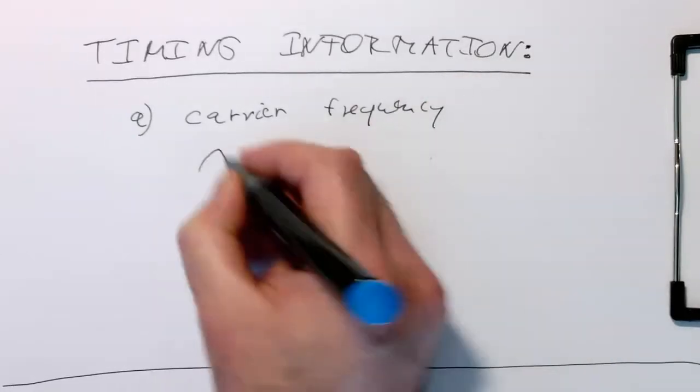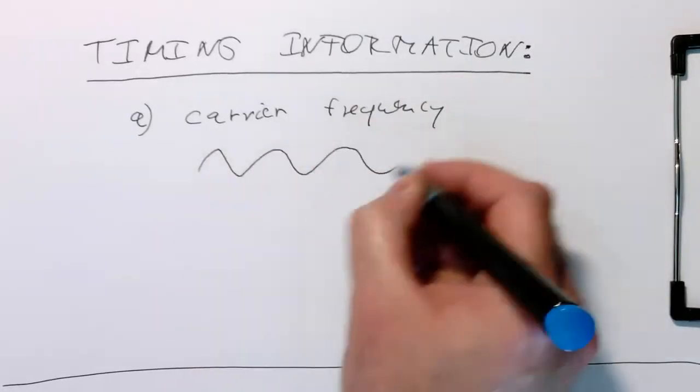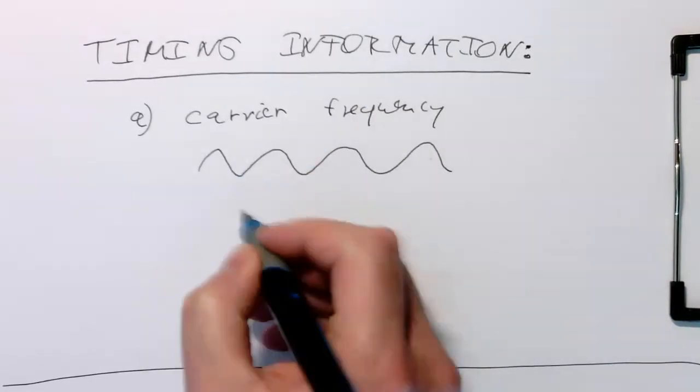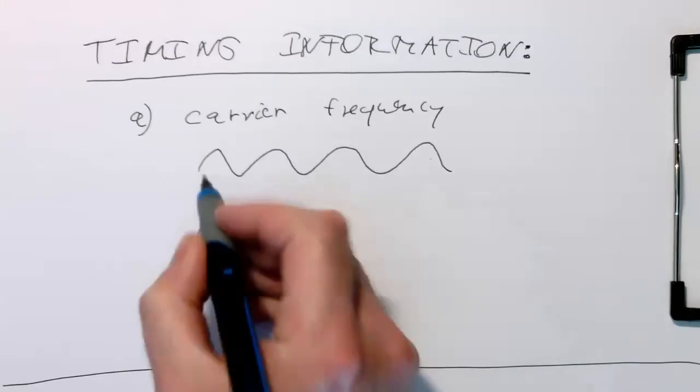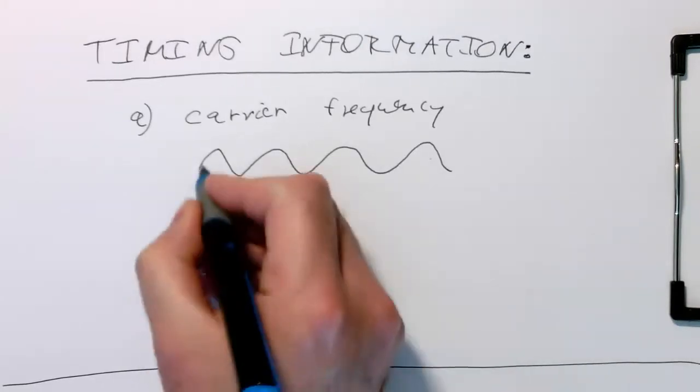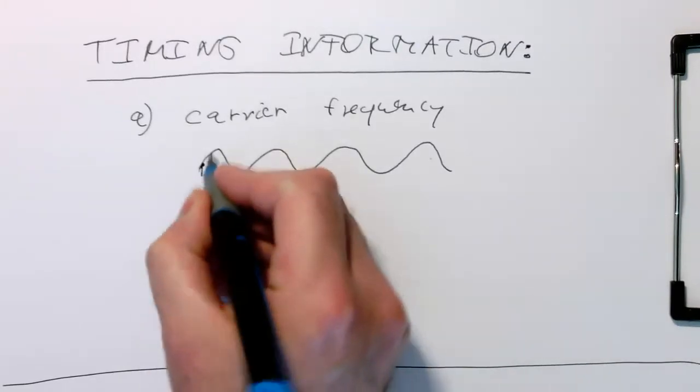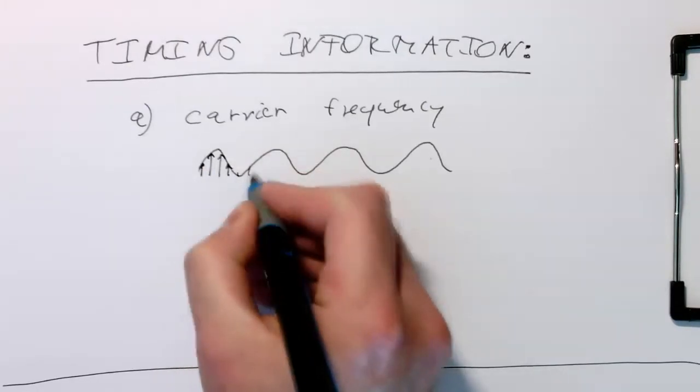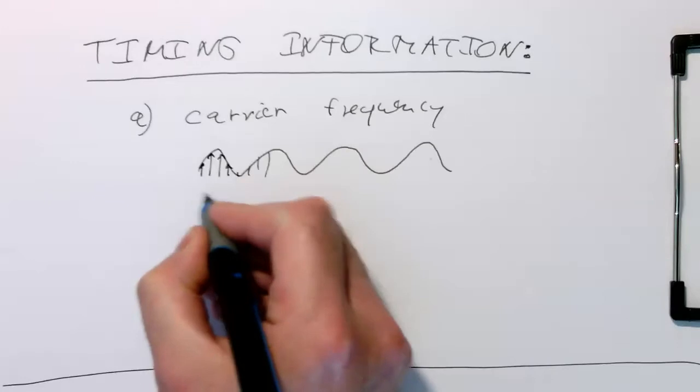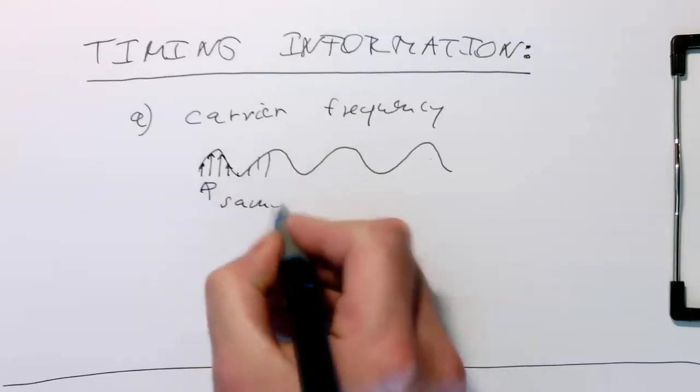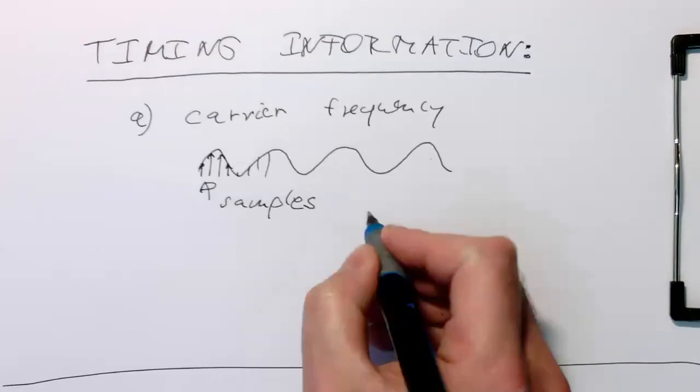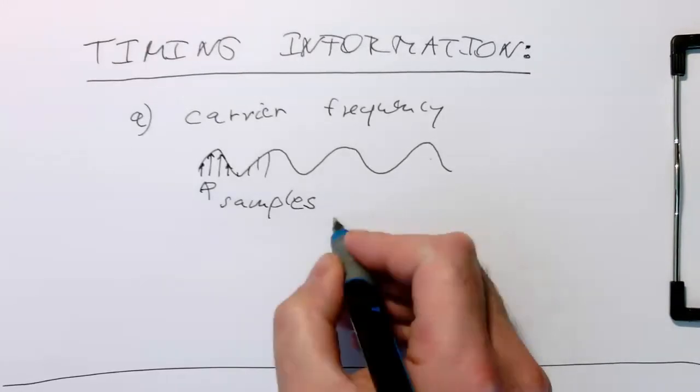So we have a certain carrier frequency, but now the issue is that this is not continuous here, but these are samples. So how do we define frequency here in terms of samples?